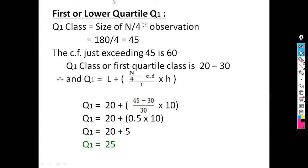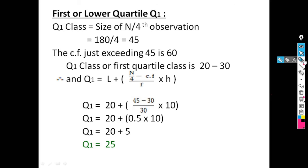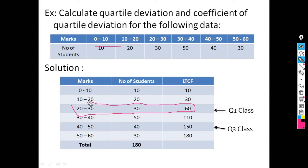Since 10 is less than 45, 30 is less than 45, but 60 is the first value greater than 45, our Q1 class is 20 to 30. The lower limit of Q1 class is 20. The formula for Q1 is: Q1 equals L plus [(N/4 minus CF) divided by F] into H.